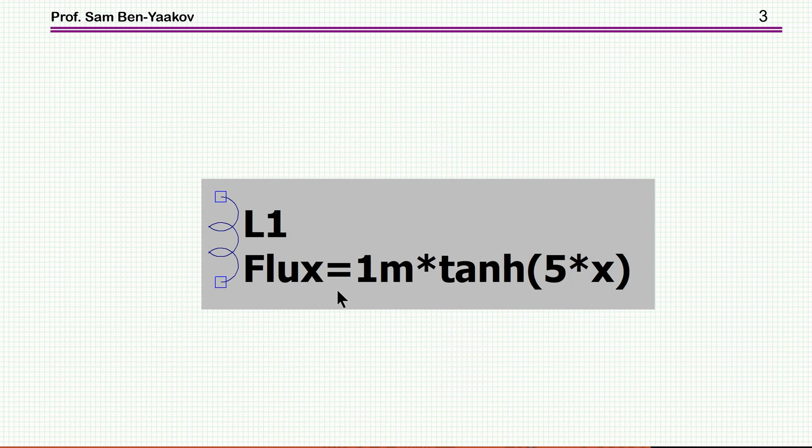Let's have a look here. This equation expresses the flux, magnetic flux within this inductor as a function of the current through it. The x is the current through the inductor. This is just an example and you are supposed to be able to put any equation here which connects the flux, makes the flux as a function of the current.